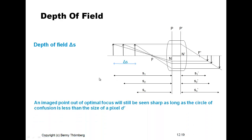An image point out of optimal focus will still be seen as sharp as long as the circle of confusion is less than the size of a pixel, D'. As long as this small circle of confusion is smaller than the pixel size, it will still appear sharp — variation within the size of a pixel does not matter.